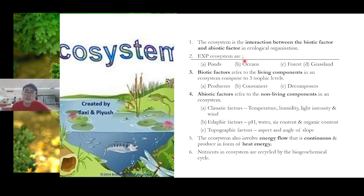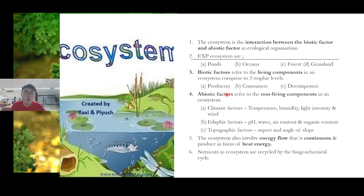Biotic factor and abiotic factor — you may have learned these terms in SPM. Biotic factor is the living components; abiotic factor is the non-living components. You can remember it this way: in biology, the prefix 'a' normally means opposite, so 'a-biotic' means non-living.